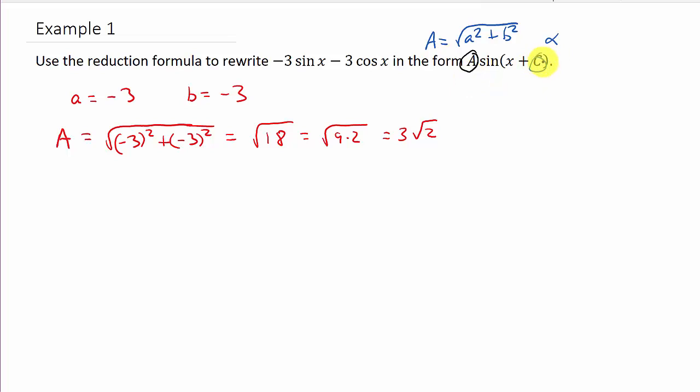And now we need c or alpha. Same thing. So, we've got tangent and we'll go ahead and use c because that's what they have in the directions. It doesn't matter what letter they use there. So, remember tangent of the angle is b over a. So, that's b which is negative three over a which is negative three. So, I get tangent c is equal to one.